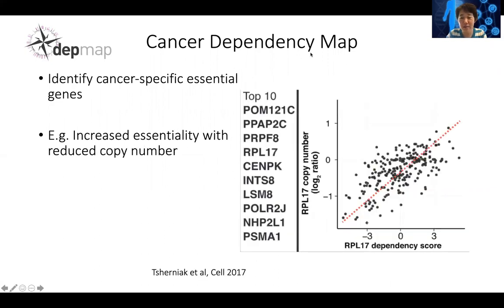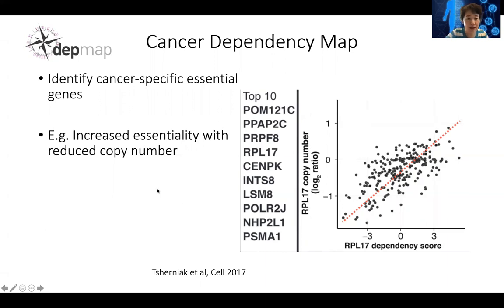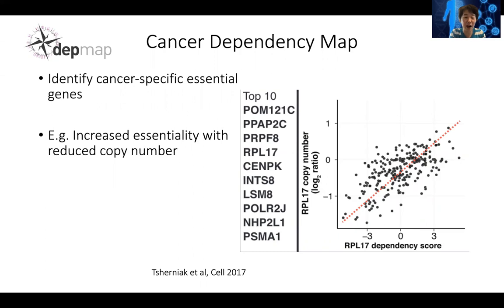In the original DepMap study, researchers also observed that when looking at RPL17 dependency score on the x-axis and RPL17 copy number on the y-axis, there is a strong positive correlation. The copy number is expressed as a log ratio, where zero means normal two copies, negative means copy number loss, and positive means amplification. When a cell loses one copy of the gene, it becomes more essential because the remaining copy produces insufficient expression — knocking out that gene then becomes a real bottleneck.